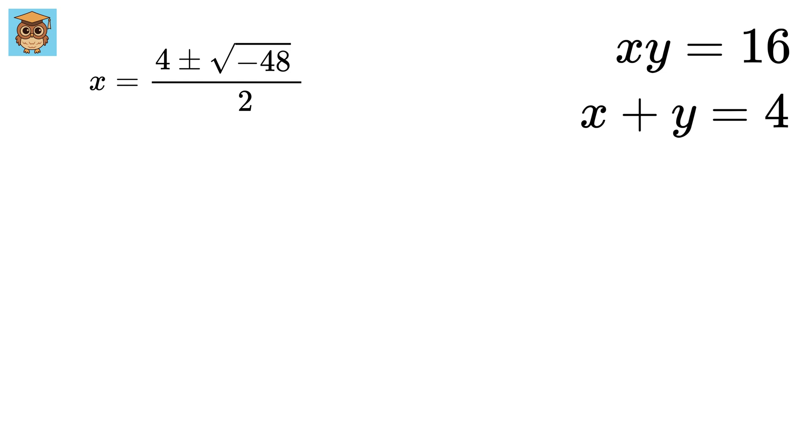Look, this minus 48 is under the root, and that's why we now have to go to the complex world. Under root minus 48 equals under root 16 times minus 3, or 4 root 3i, where i is the imaginary number, or root of minus 1.